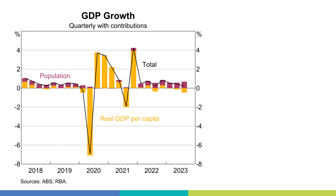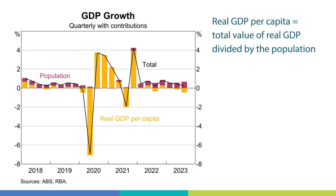If we focus on the yellow bars, this represents real GDP per capita. GDP per capita is the total value of GDP divided by the population, while the term real means we are taking into account the effect of inflation.